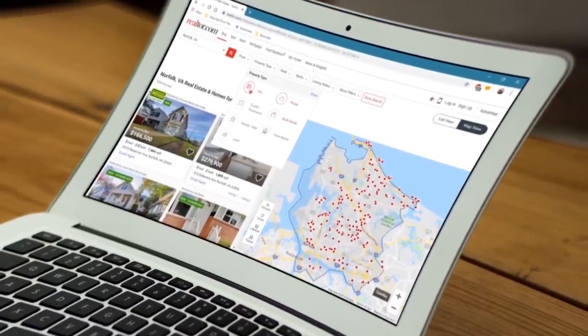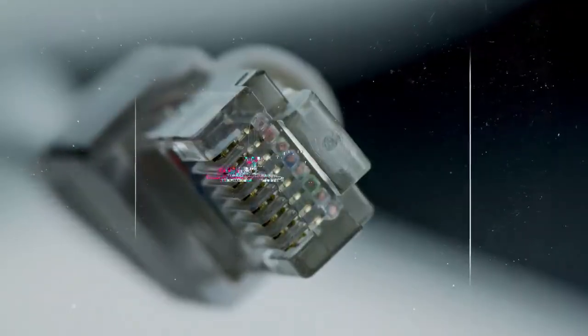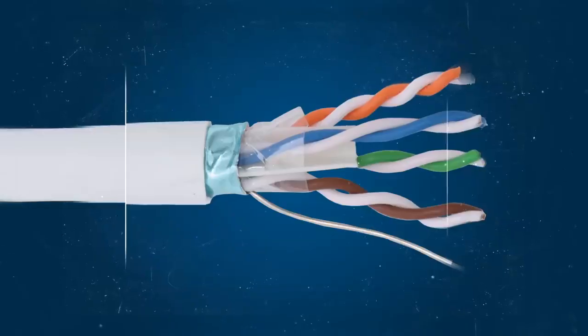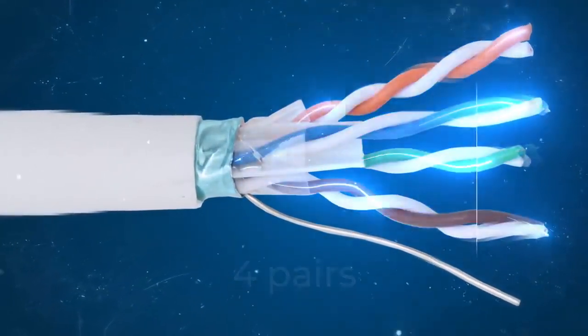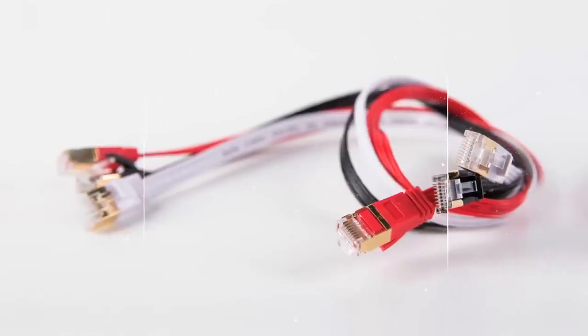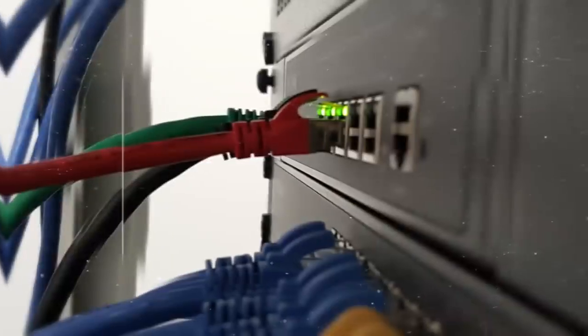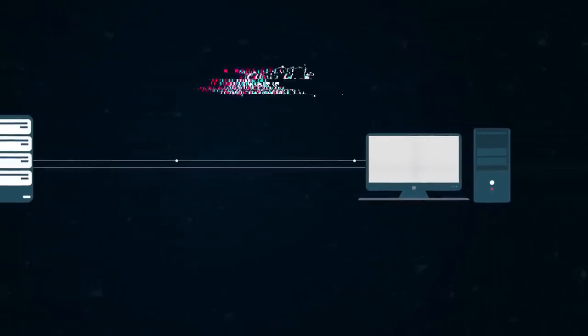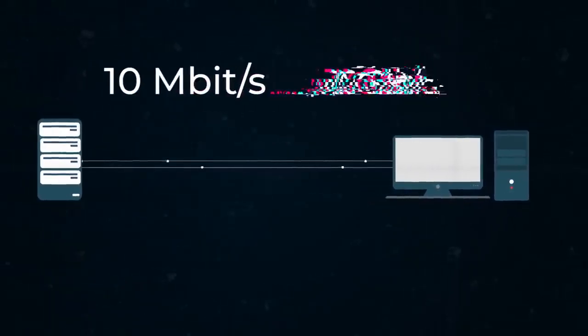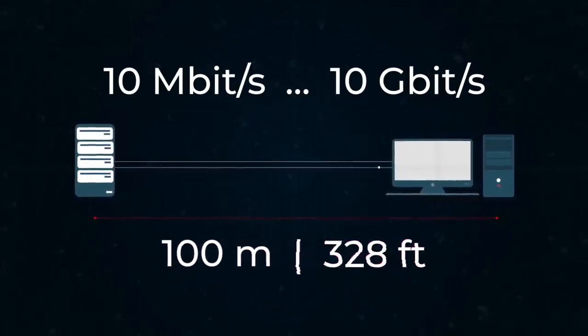There are several technologies used to transmit information over an internet connection. One of them is made through a twisted pair cable. Inside this, there are usually four pairs of conductors through which the signals that encode data pass. There are many types of cables based on twisted pairs, but I won't bore you with unnecessary information. The average data transfer rate with this method is from 10 megabits per second to 10 gigabits per second at a distance of up to 100 meters, or about 328 feet.